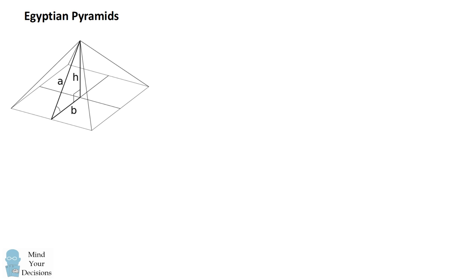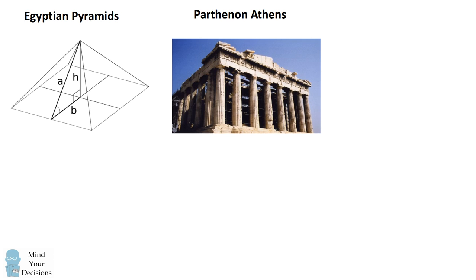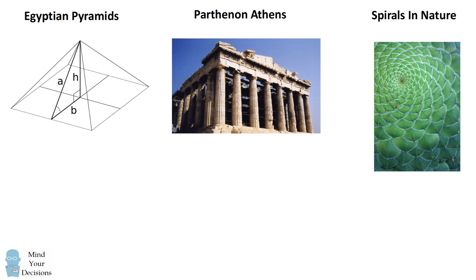There is a mathematical connection between the Egyptian pyramids, the Parthenon in Athens, and spirals in flowers in nature.